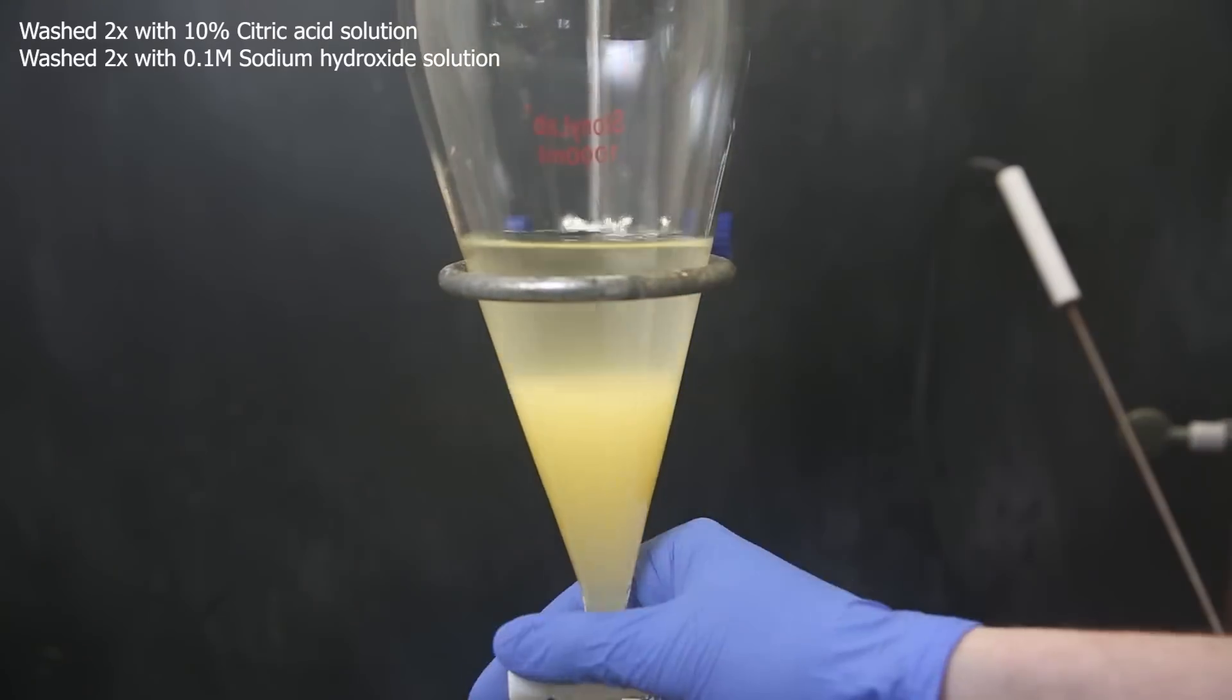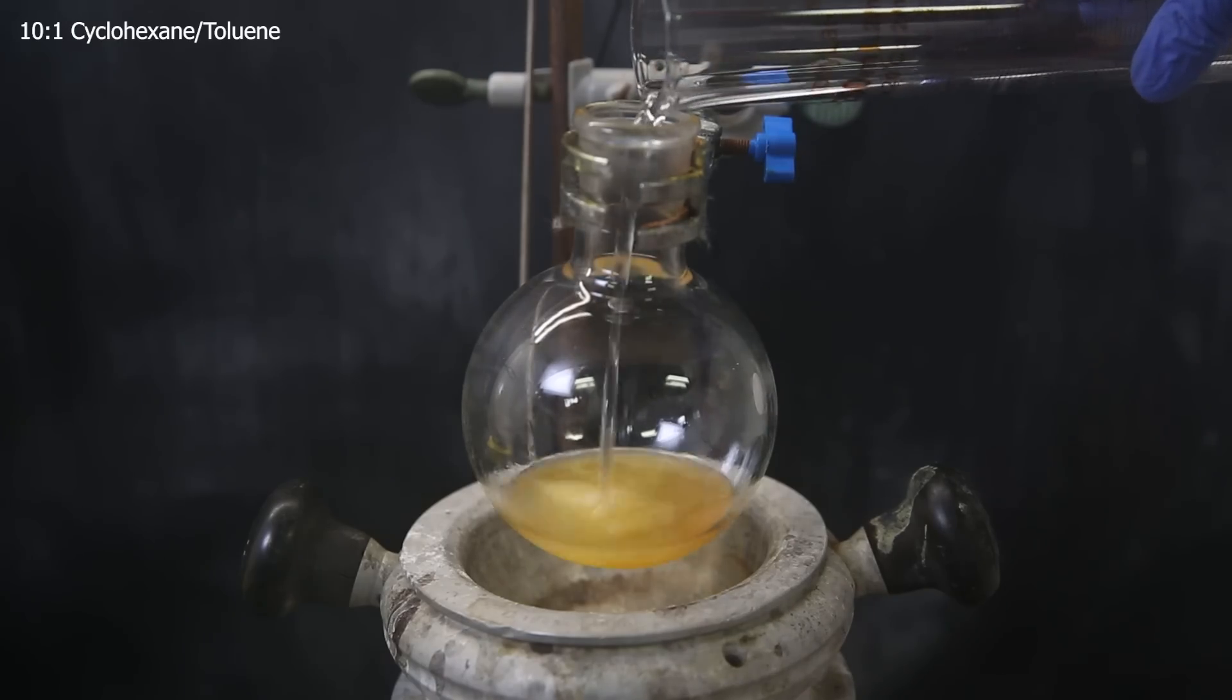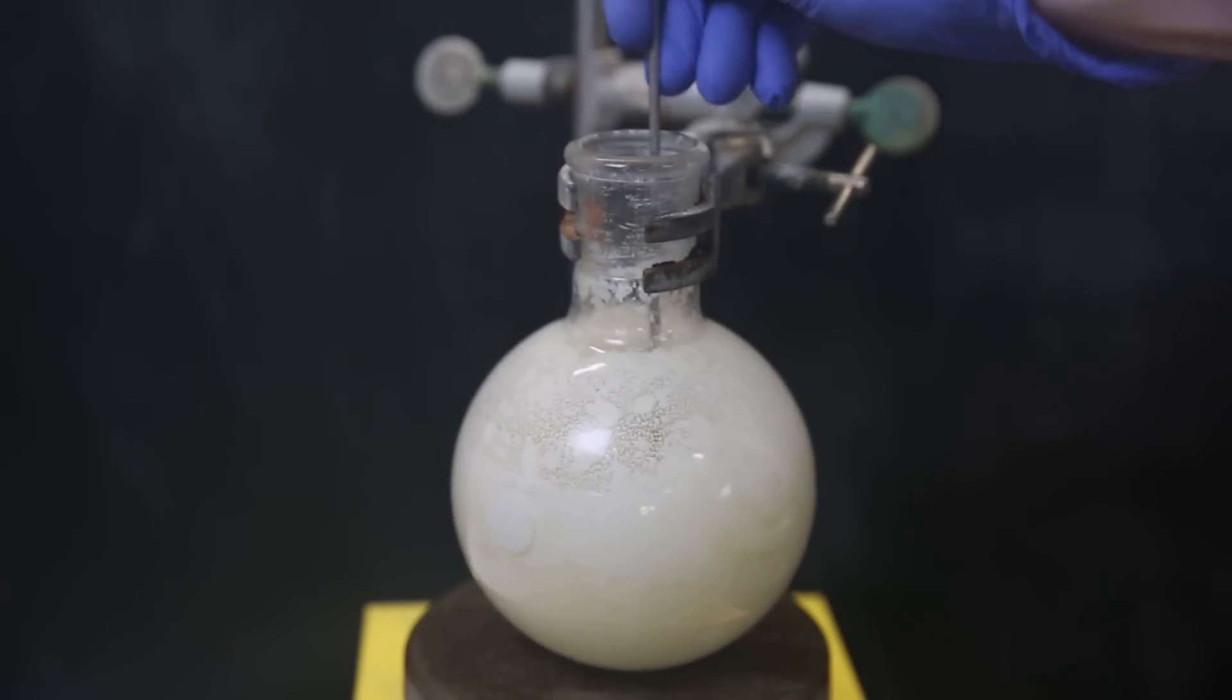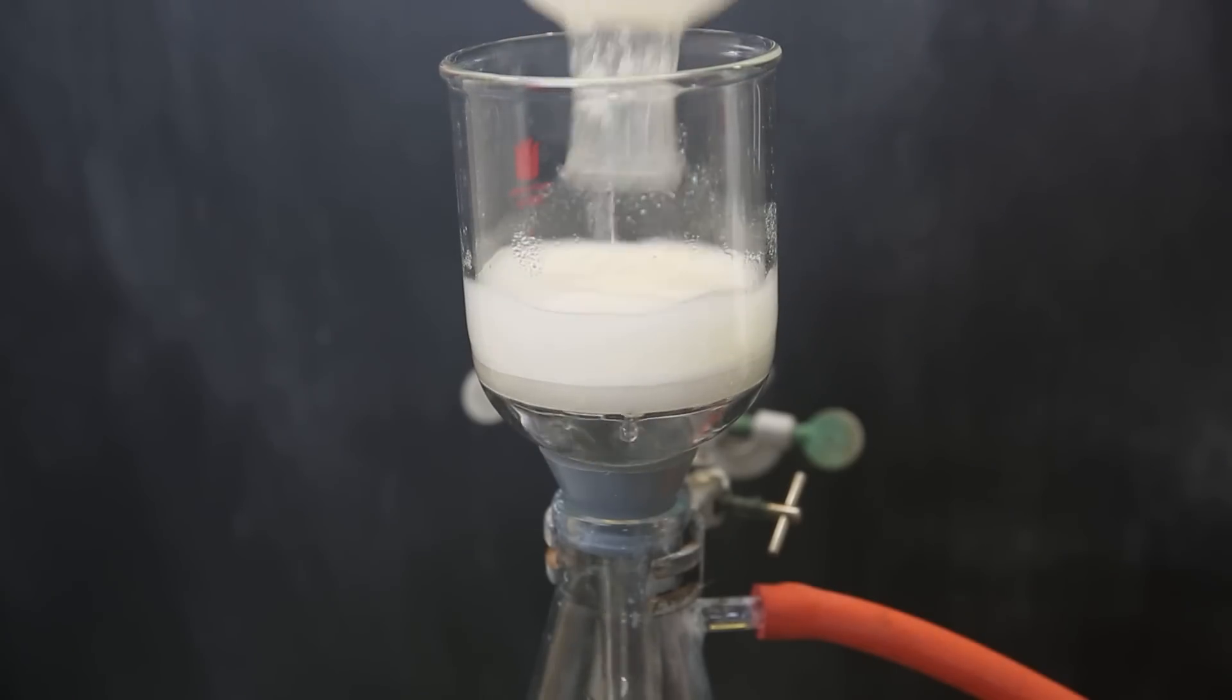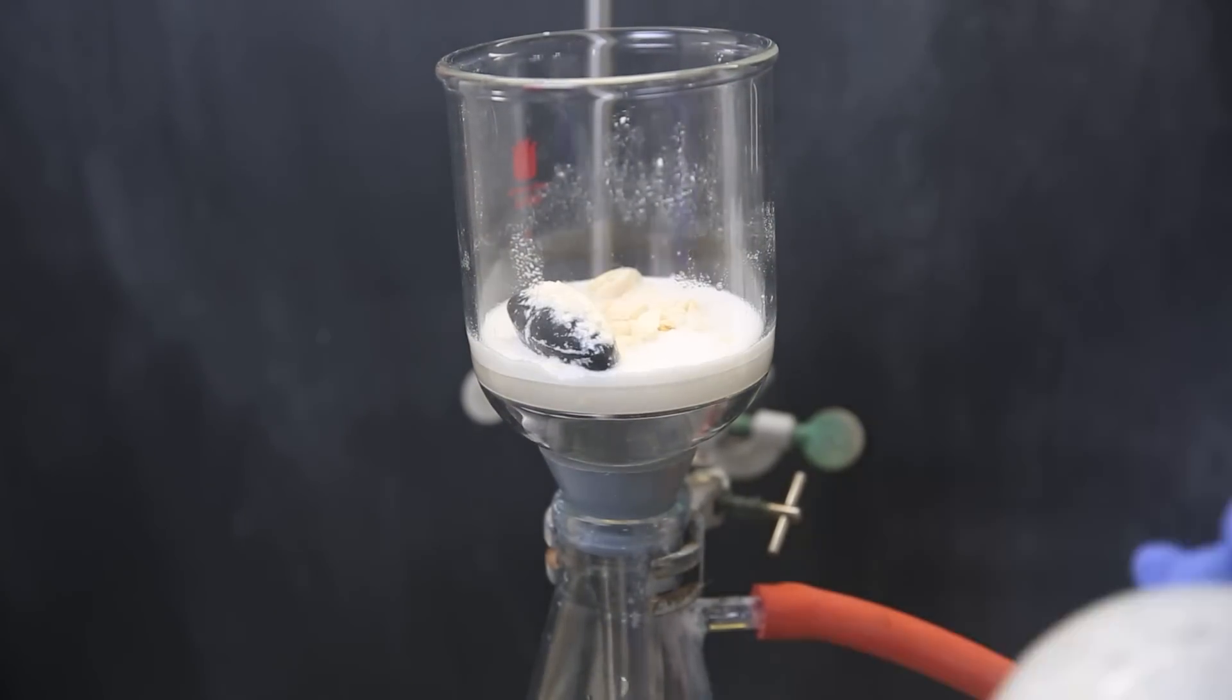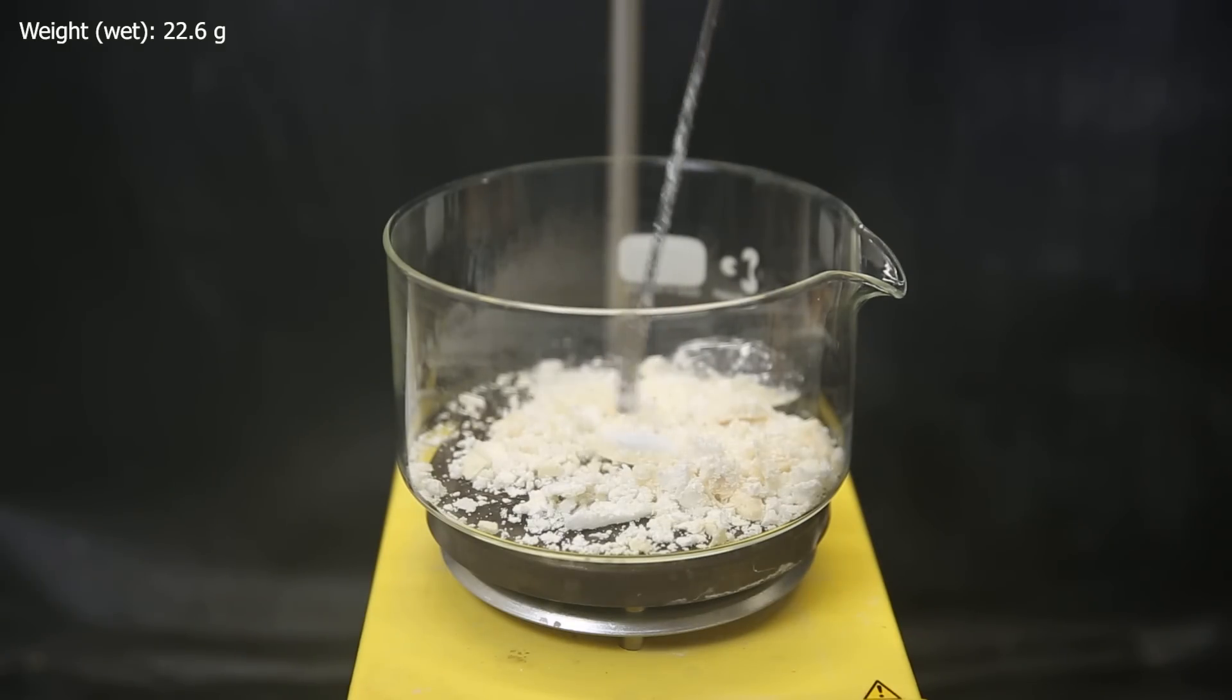So I take the washed dichloromethane layer and distill off all of the solvent, leaving behind an orange-ish liquid. To force it to solidify, I add some 10 to 1 cyclohexane toluene mixture and shake it strongly. After leaving it to stir overnight, all of the oil splashed on the walls and luckily solidified to become an off-white solid. To collect it, I set it up for vacuum filtration, but a lot of it is stuck to the flask, so I have to scrape it off and wash it out with more of the solvent mixture. I then move it all to this dish and the weight is 22.6 grams, but it is not pure yet, so I will have to do a few more things to make it suitable for consumption.